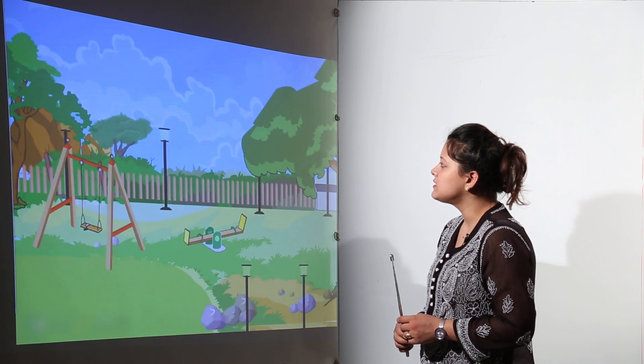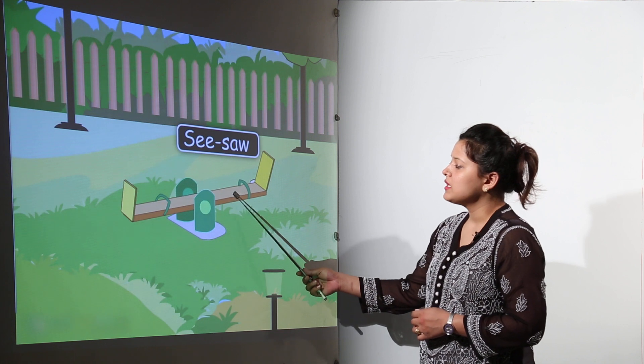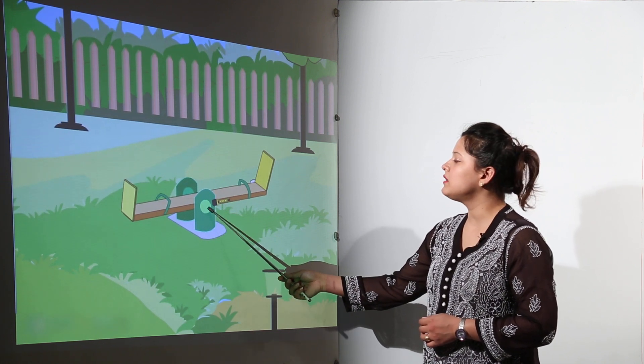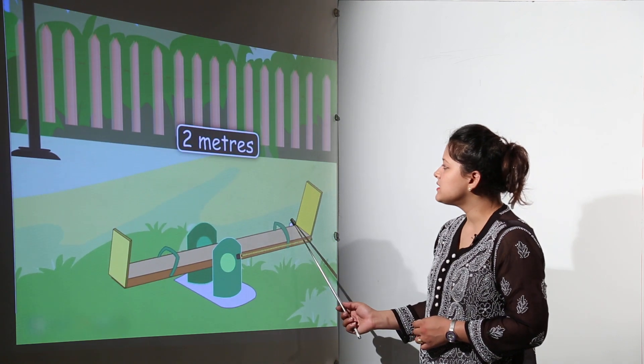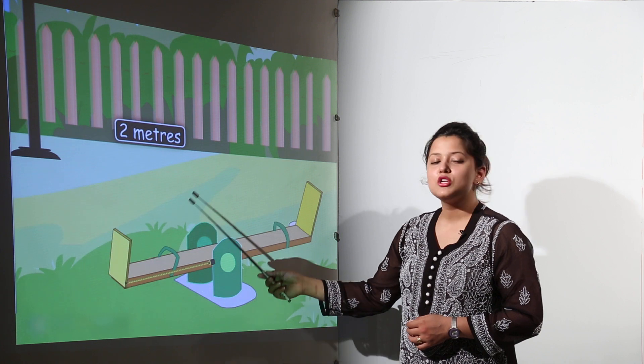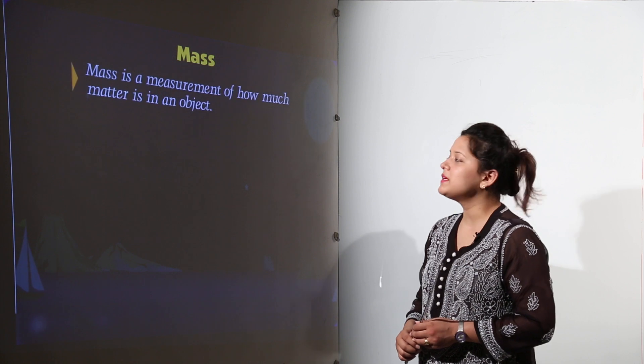Next what do we have is the measurement of the seesaw. The seesaw is having some length. We can measure it from the middle. On one side it is 2 meters and on the other side also it will be 2 meters in length. So in total the length of the seesaw is 4 meters.